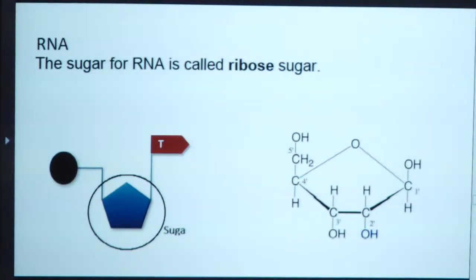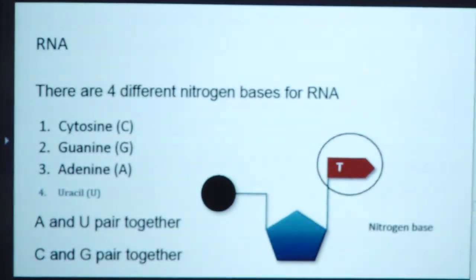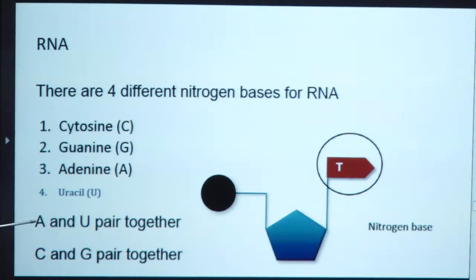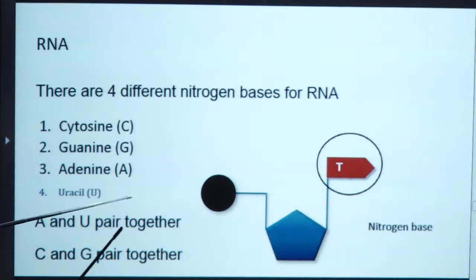The sugar for RNA is known as ribose sugar. There are four different nitrogenous bases in ribonucleic acid: cytosine, guanine, adenine, and uracil. In RNA, the differentiating nitrogenous base is uracil — thymine is present in DNA, but uracil is present in RNA in its place. Adenine and uracil pair with each other in RNA, and cytosine pairs with guanine.